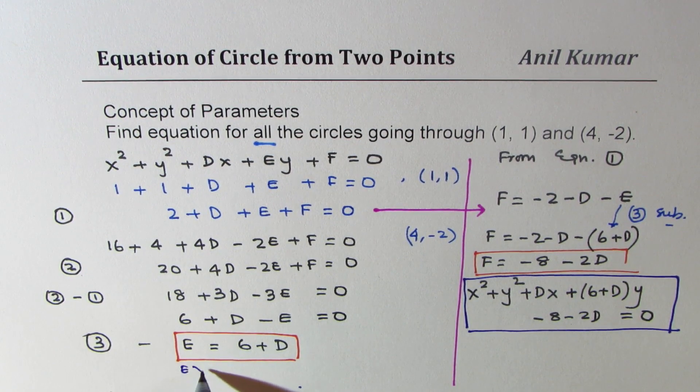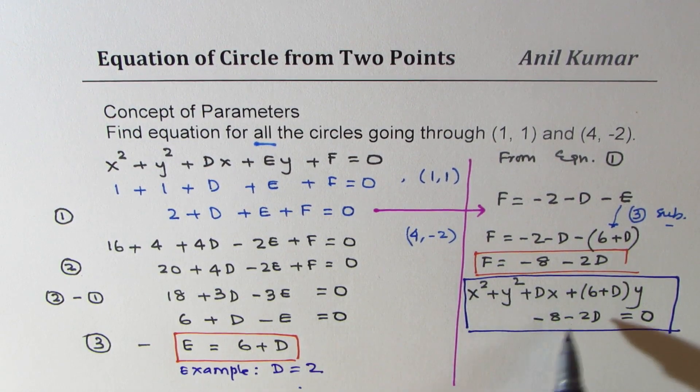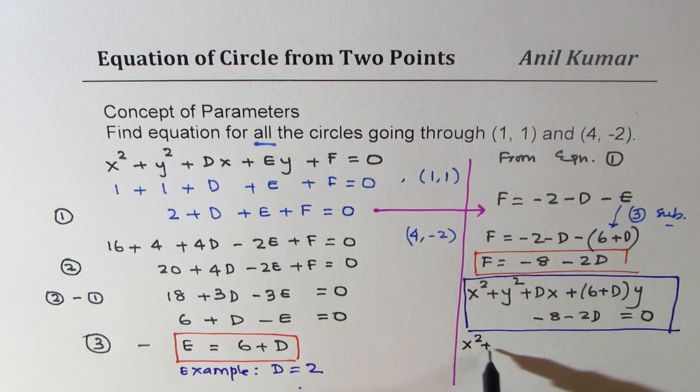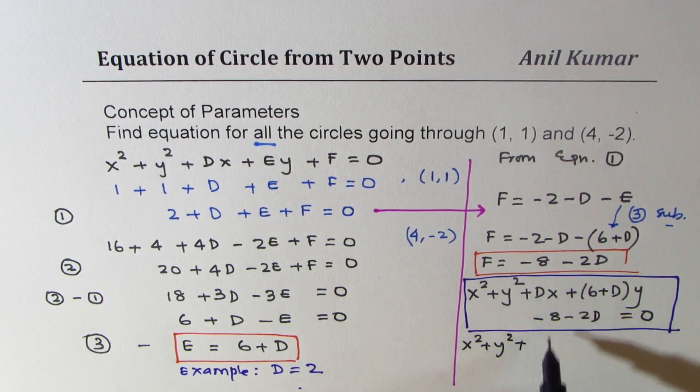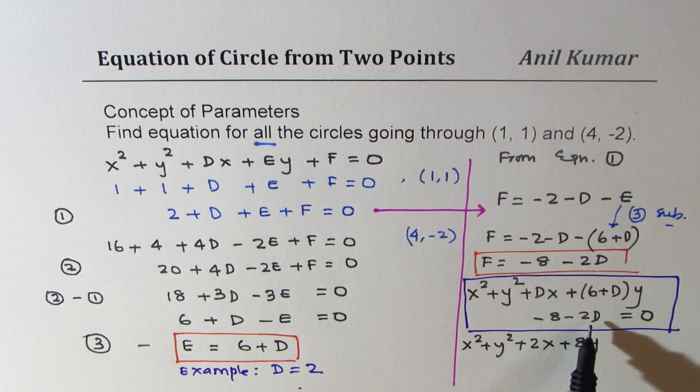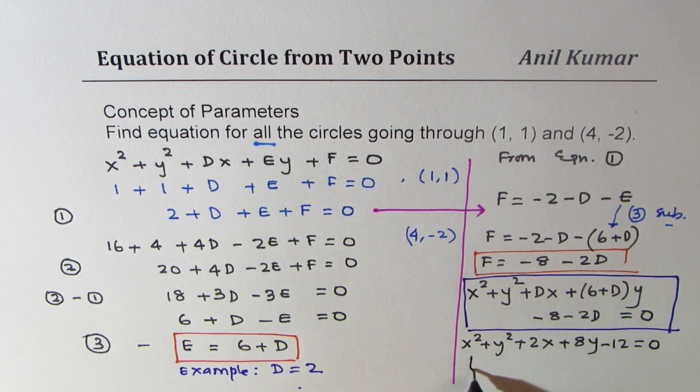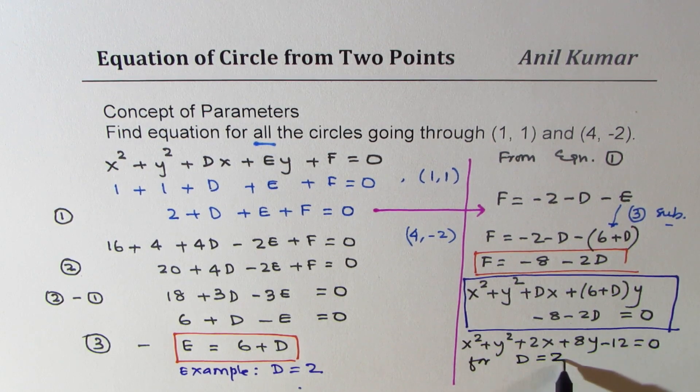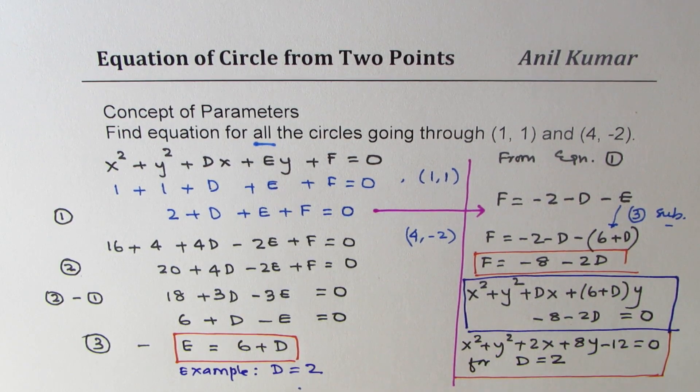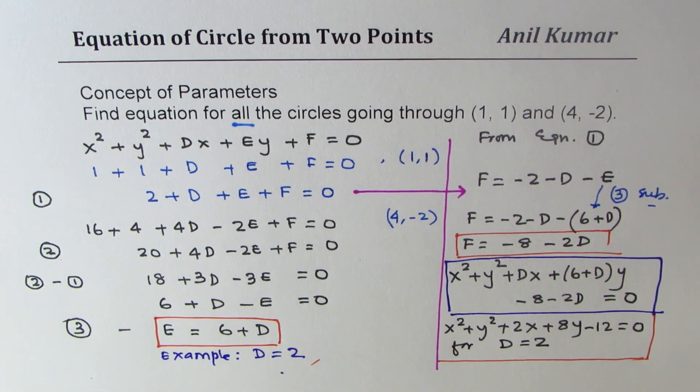For example, if I substitute d = 2, in that case we get x² + y² + 2x + 8y - 12 = 0. So that becomes the equation for d = 2. So we could actually get different equations by using different values of d. Similarly, you could substitute any other value of d and get a third equation.